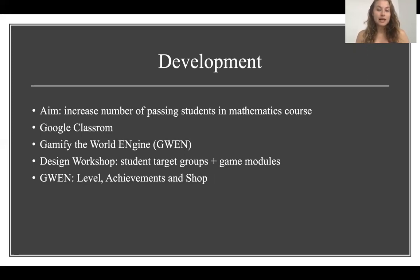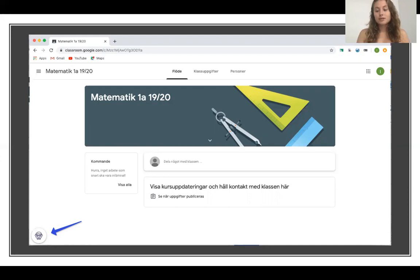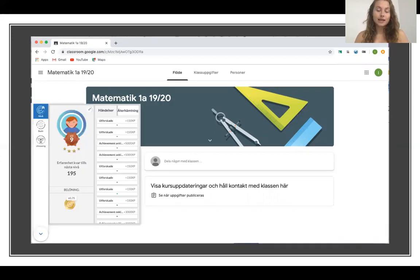The result was that three main elements were chosen: level, achievement, and shop. To give you a short overview of how this implementation looked, this is the interface that the students saw when first logging into Google Classroom. As you can see in the bottom left corner, there is a widget that the students could press to be able to access the different game elements.